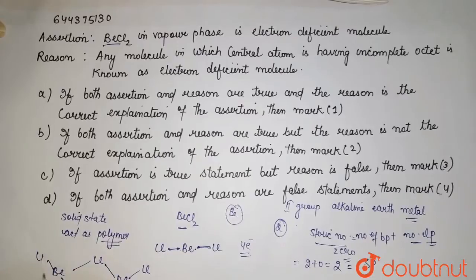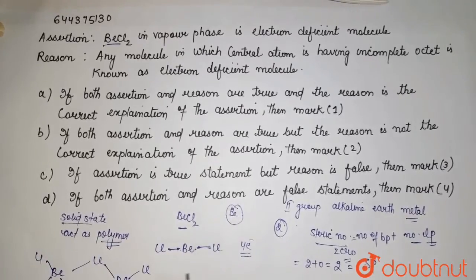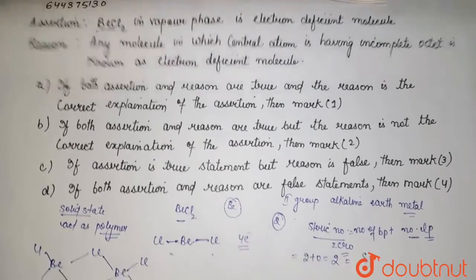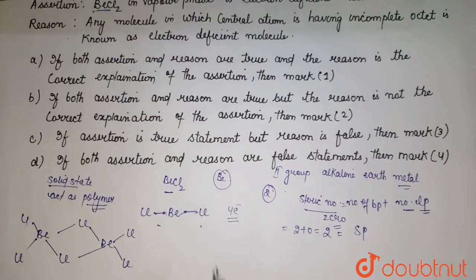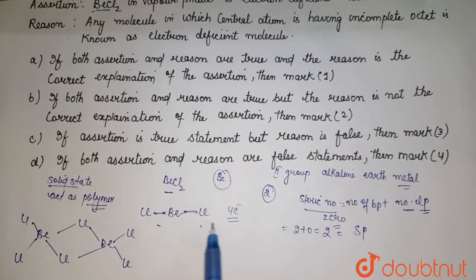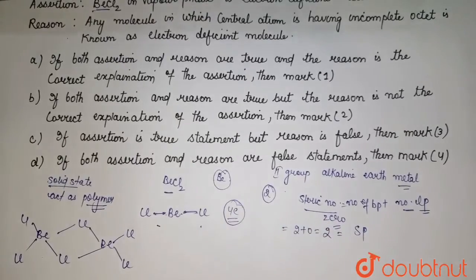This is the polymer when it is in solid state. When it is in vapor phase, it exists like this. So in vapor phase it exists like this. Here it is a four electron species.